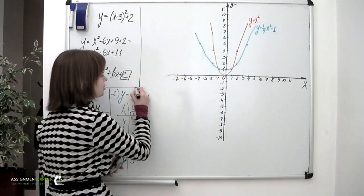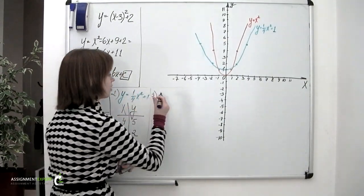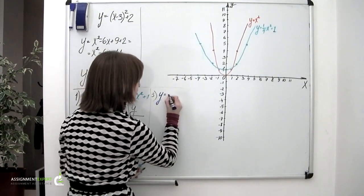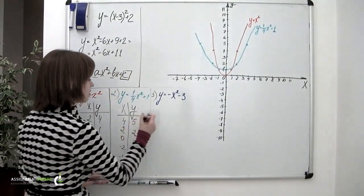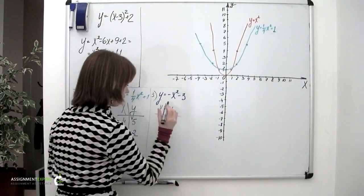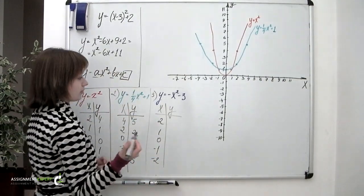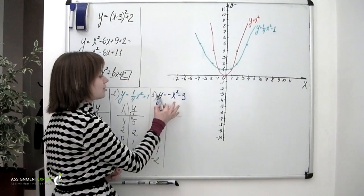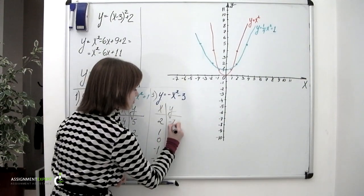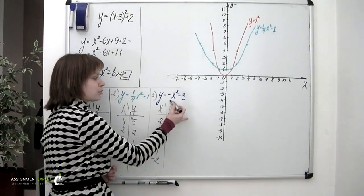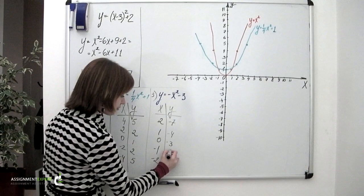Let's now consider the third parabola: y equals negative x squared minus 3. We fill in the coordinate table again, picking random x values and substituting them into the equation. For x equals 2: 2 squared is 4, and negative 4 minus 3 yields negative 7. For x equals 1: 1 squared is 1, then negative 1 minus 3 yields negative 4. Then we have negative 3 at x equals 0, and again negative 4, and negative 7 for the symmetric values.